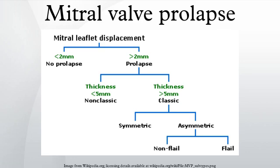Applying them to children may be misleading. Classic versus non-classic: prolapse occurs when the mitral valve leaflets are displaced more than 2 mm above the mitral annulus high points. The condition can be further divided into classic and non-classic subtypes based on the thickness of the mitral valve leaflets — up to 5 mm is considered non-classic, while anything beyond 5 mm is considered classic MVP.